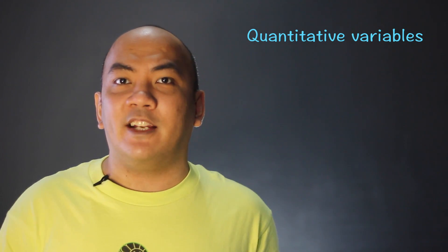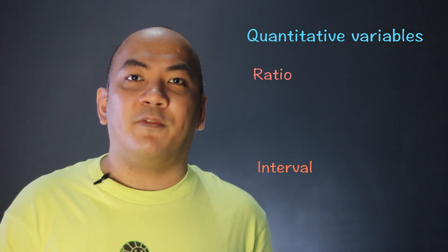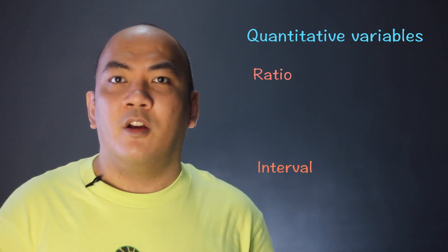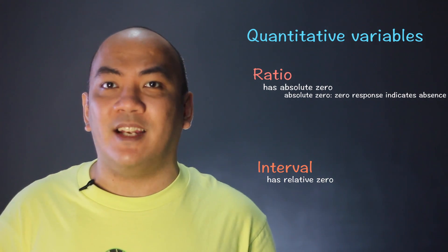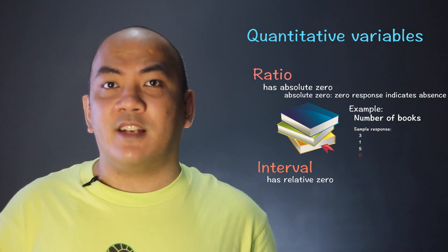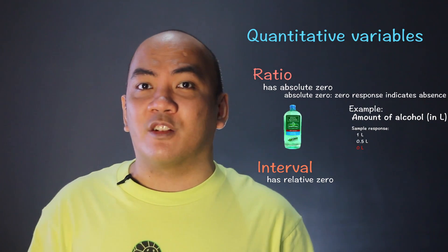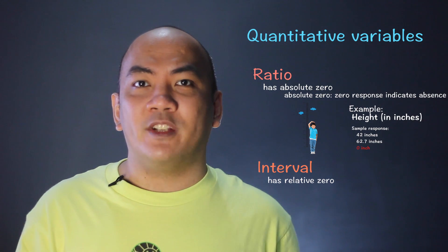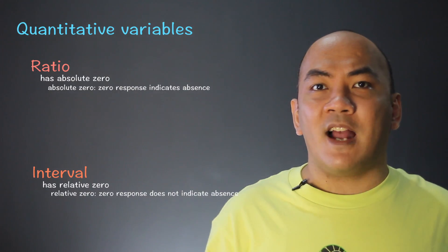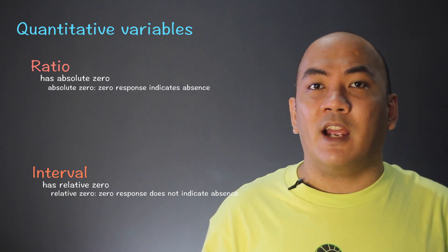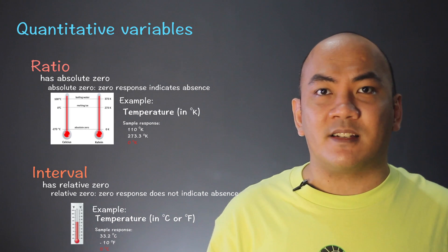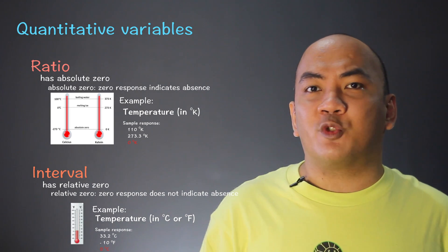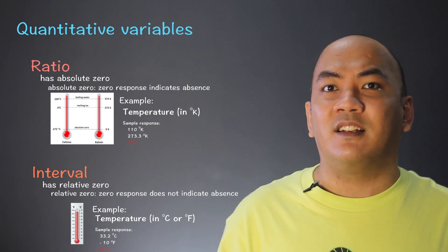As for the quantitative variable, similarly it may be categorized into two levels: the interval and ratio. To differentiate these two, remember two things. First, ratio has absolute zero while interval has relative zero. Absolute zero means that a zero response indicates nothingness or absence — like number of books, where zero means there is no book; amount of alcohol, where zero liters means there is no alcohol; and height, where zero foot indicates the object is absent or does not exist. In relative zero, a zero response does not mean absence. For example, zero degrees Celsius does not imply absence of heat. Although zero degrees Kelvin in physics means absence of heat, making temperatures in degrees Kelvin a ratio, while degrees Fahrenheit and degrees Celsius are in interval.